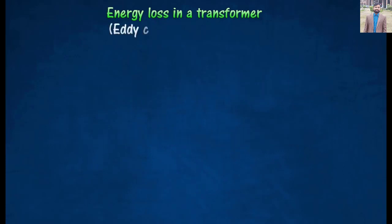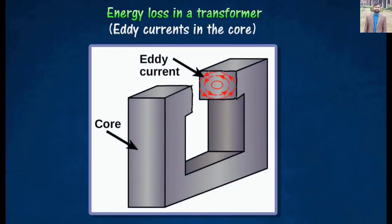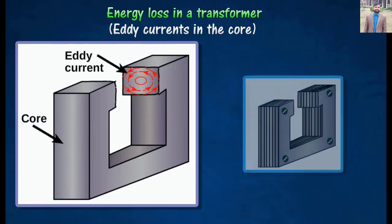occur whenever a transformer is energized and remain essentially constant regardless of how much electric power is flowing through it. To reduce core losses, high-efficiency transformers are designed with a better grade of core steel and with thinner core laminations than standard efficiency models.